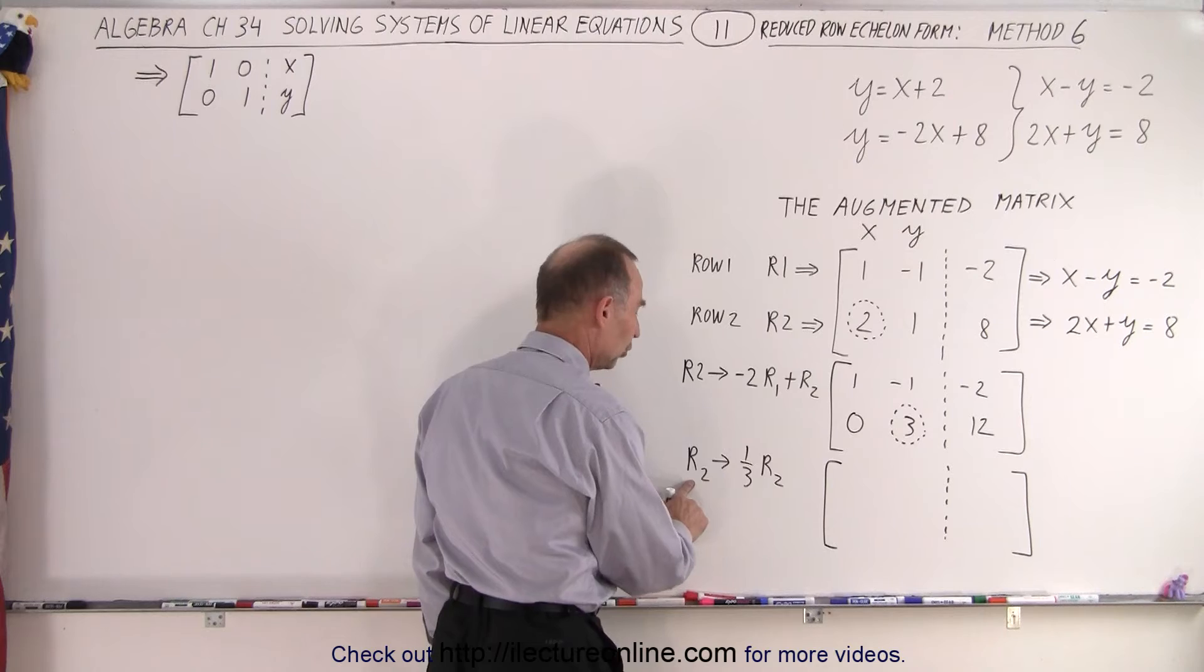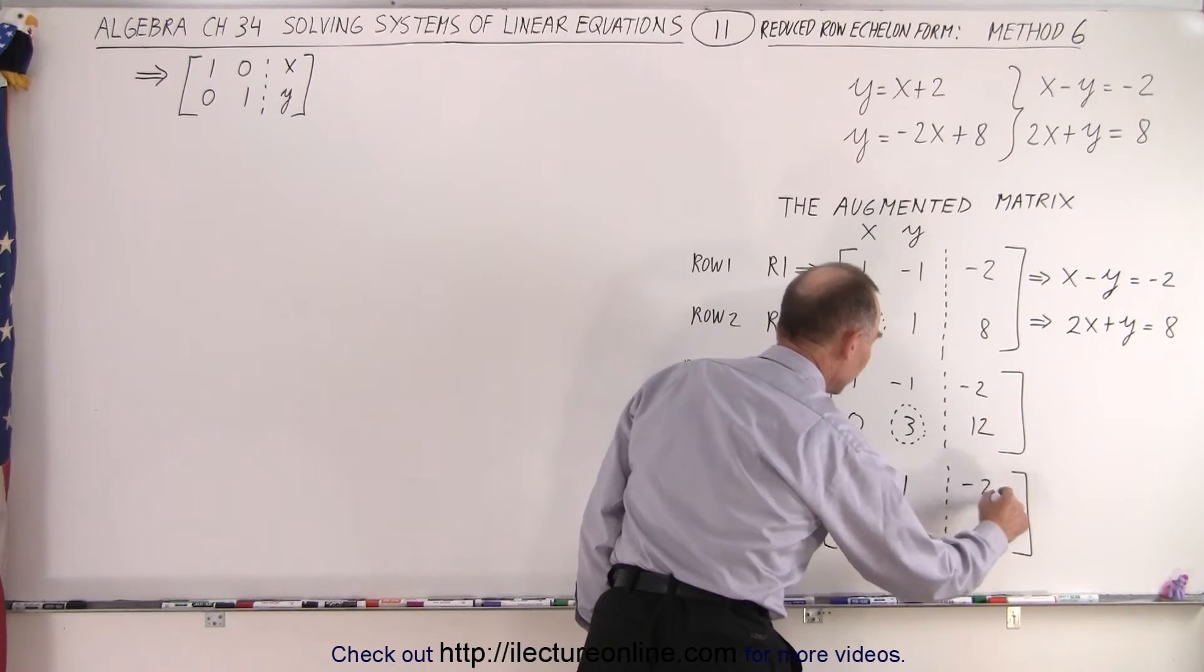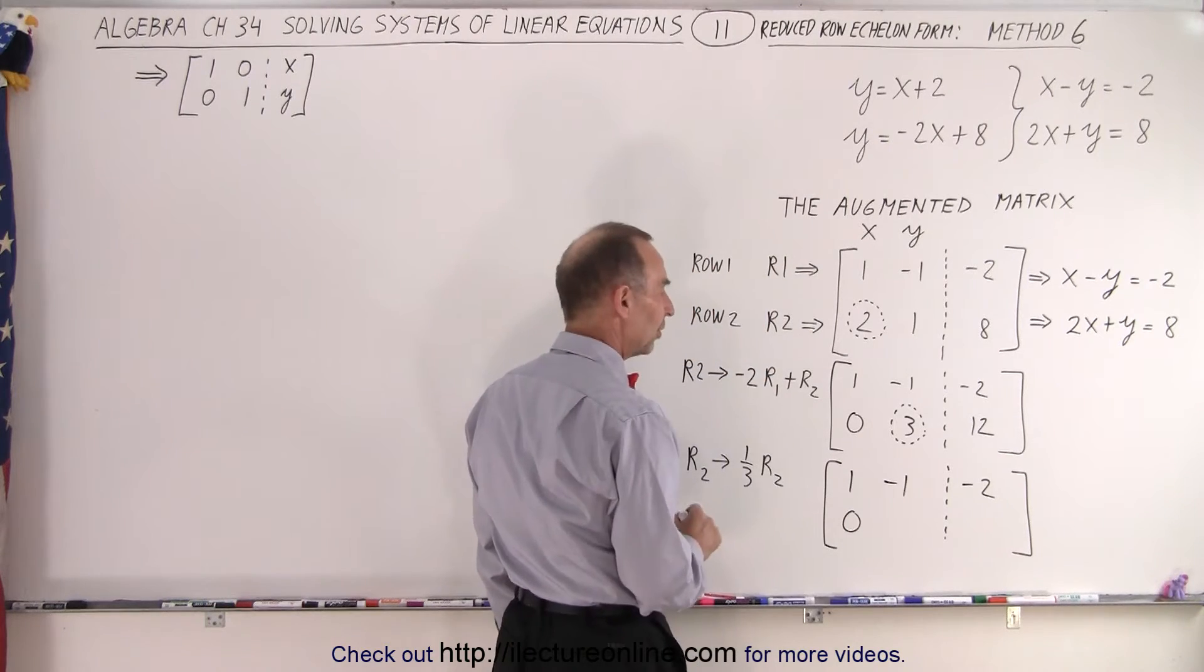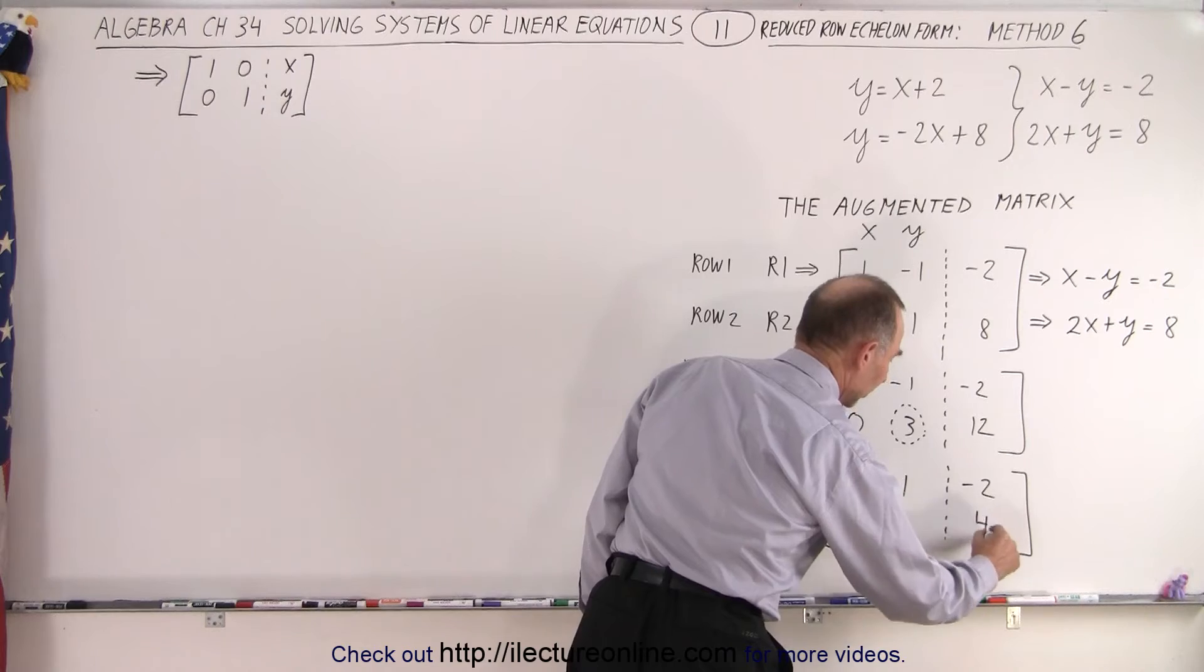Notice we're only changing row 2. So row 1 stays the same: 1, negative 1, and negative 2. But here, 0 divided by 3 is 0, 3 divided by 3 is 1, and 12 divided by 3 is 4.